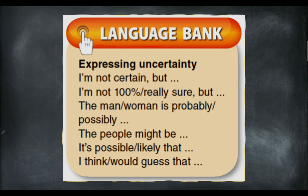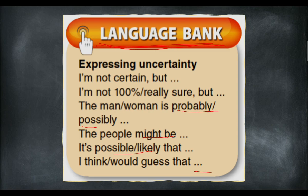Today you are going to learn some more. If you refer to the language bank, there are more examples: 'I am not certain,' 'I am not 100% sure,' 'I am not really sure.' The man or woman is 'probably' or 'possibly' — kemungkinan, mungkin. 'The people might be...' — orang-orang itu mungkin. 'It is possible,' 'It is likely that' — berkemungkinan. Also 'I think' or 'I would guess that.' These are expressions you can use especially in speaking tasks when you are giving an opinion and you are not sure whether your opinion is correct.